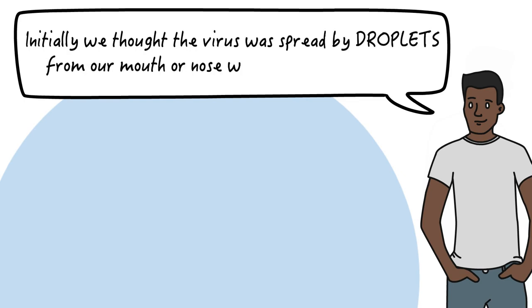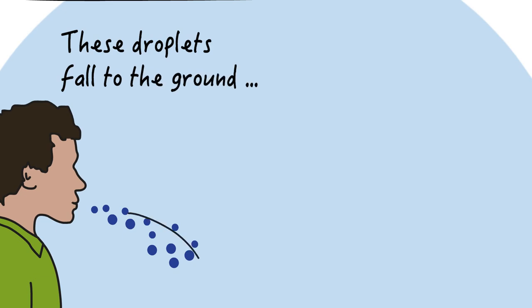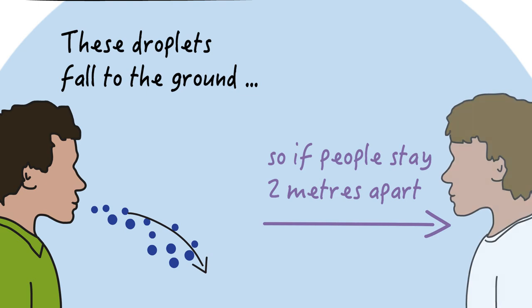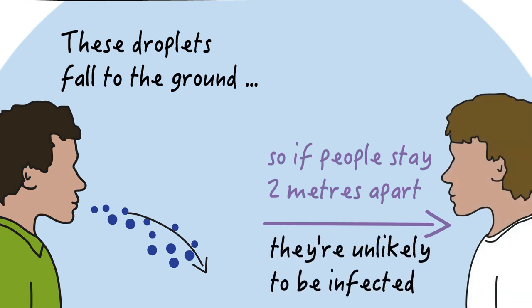Initially, we thought the virus was spread by droplets from our mouth or nose when we cough or sneeze. These droplets fall to the ground, so if people stay two meters apart, they're unlikely to be infected.